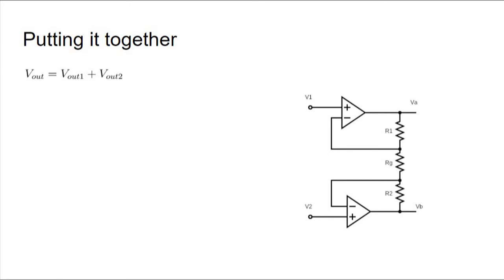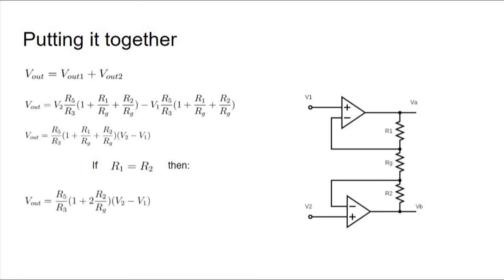Plugging them in, we get Vout equals V2 times R5 over R3 times the quantity 1 plus R1 over RG plus R2 over RG minus V1 times the same. There's lots of repeating parts here. We can factor out R5 over R3 times the quantity 1 plus R1 over RG plus R2 over RG, and we notice it's all being multiplied by V2 minus V1. We can simplify this further if we set R1 equal to R2. Then our output becomes Vout equals R5 over R3 times the quantity 1 plus 2 times R2 over RG times V2 minus V1.